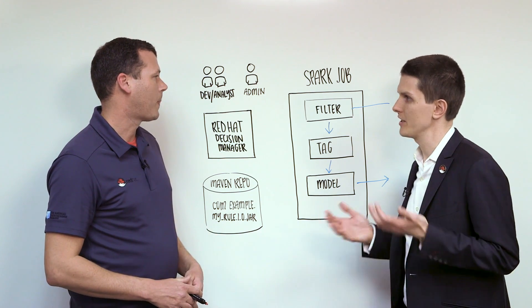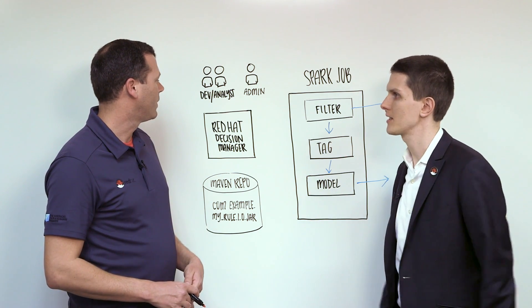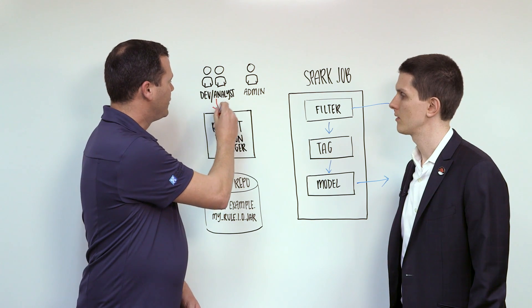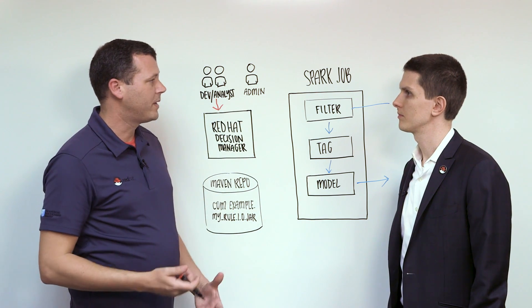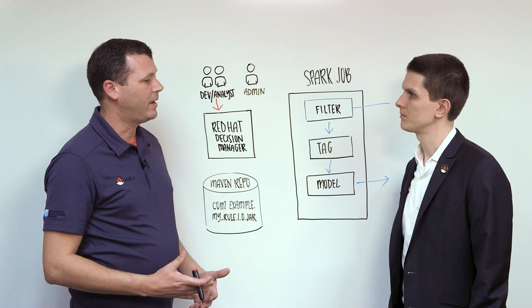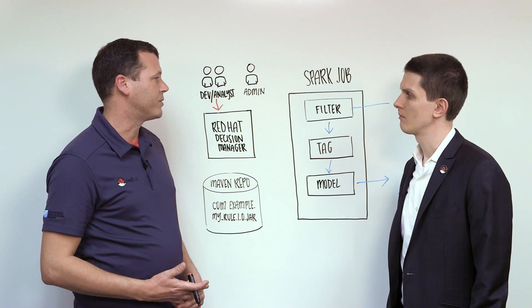All right. So then what about testing? Can they actually test these rules there? Or do they have to be taking over my entire Spark cluster to run their tests? So the testing can actually be done directly within Red Hat Decision Manager. You can set up tests there and you can also integrate or run your JUnit tests within JBoss Developer Studio.